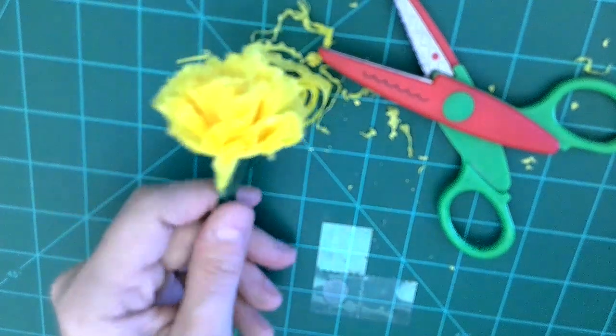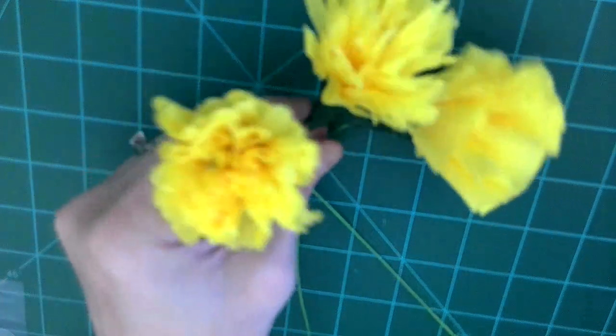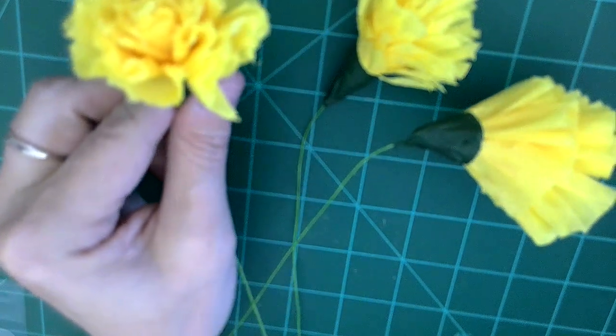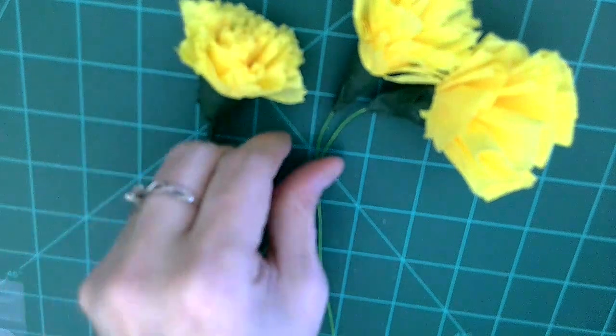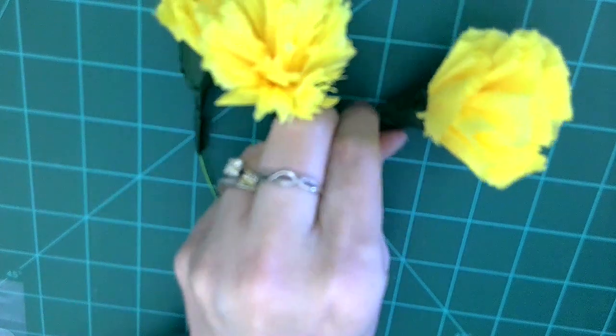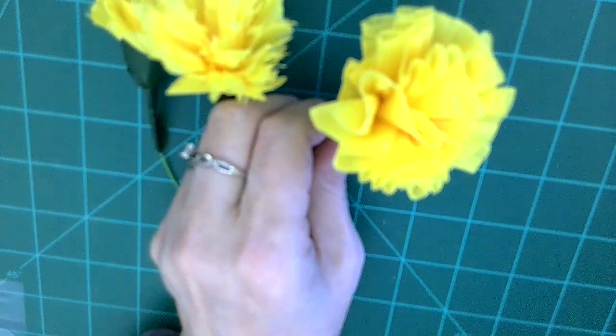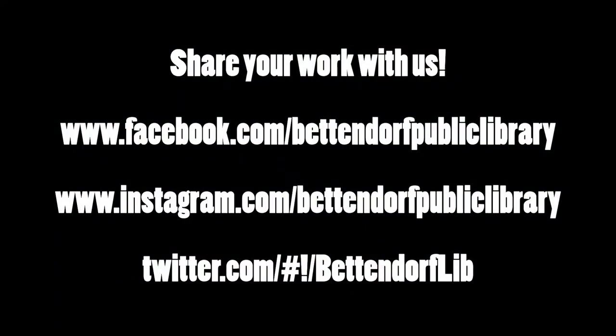So I've just secured my flower to my floral stem with the tape and here you have your carnation type flower, your spider mum type flower, and your rose type flower. Hope you enjoyed today's take home workshop.